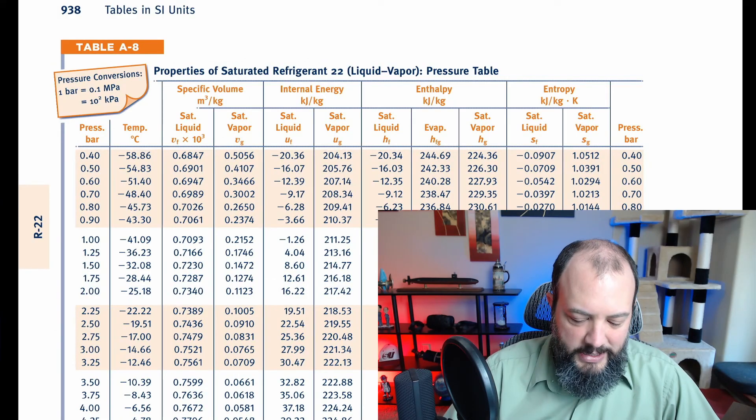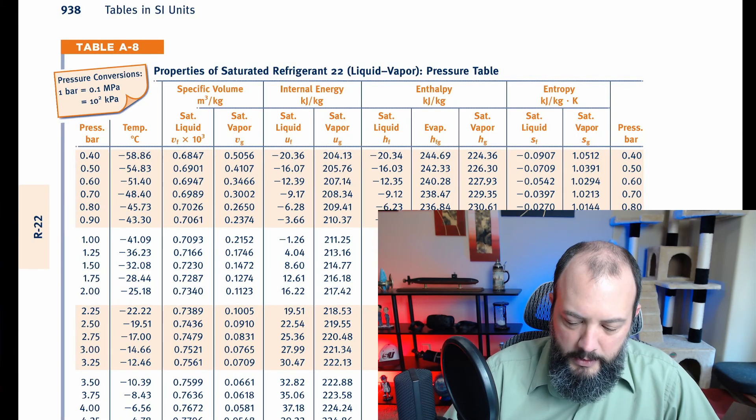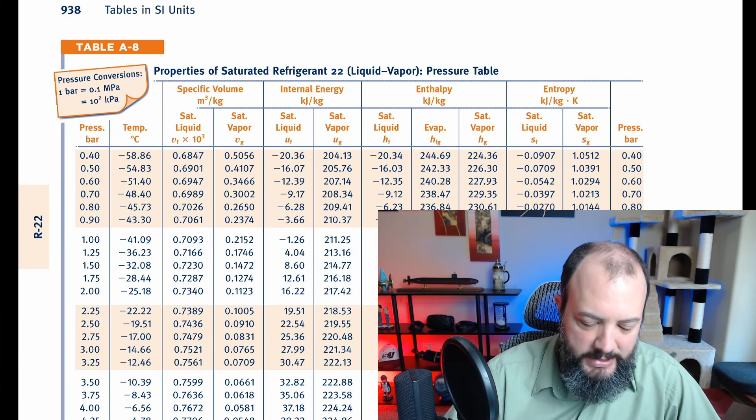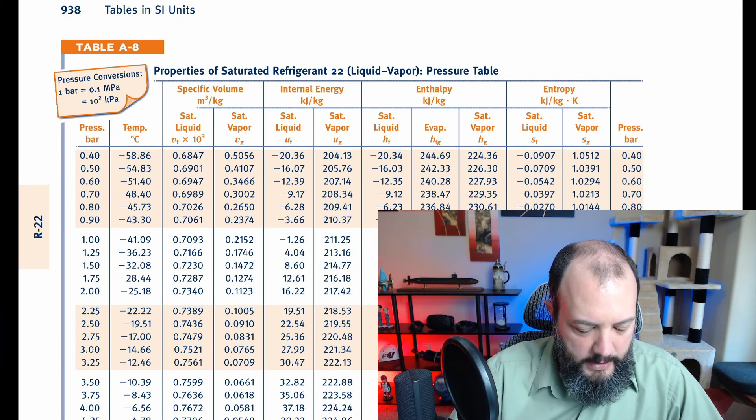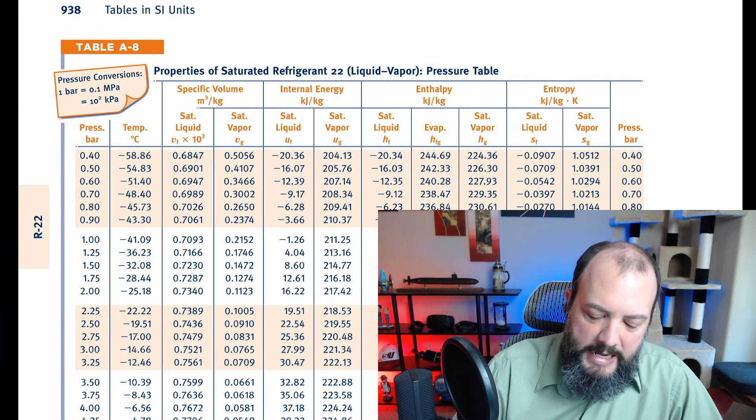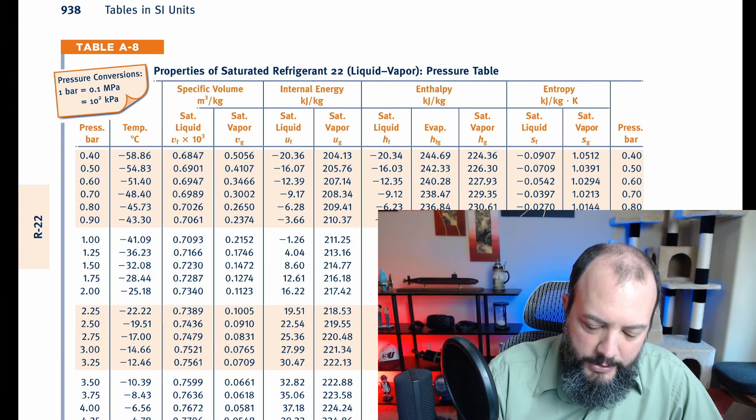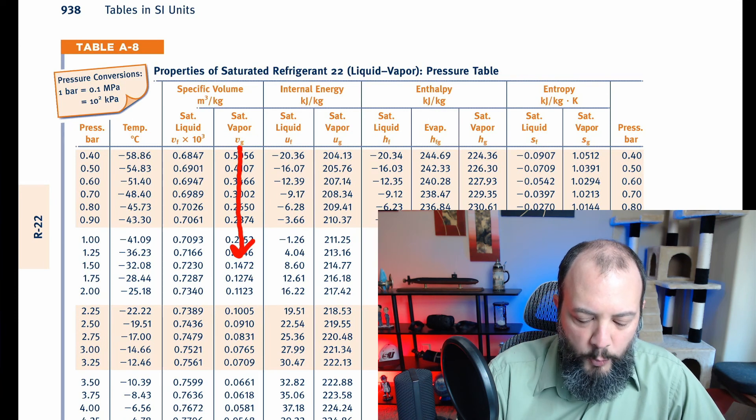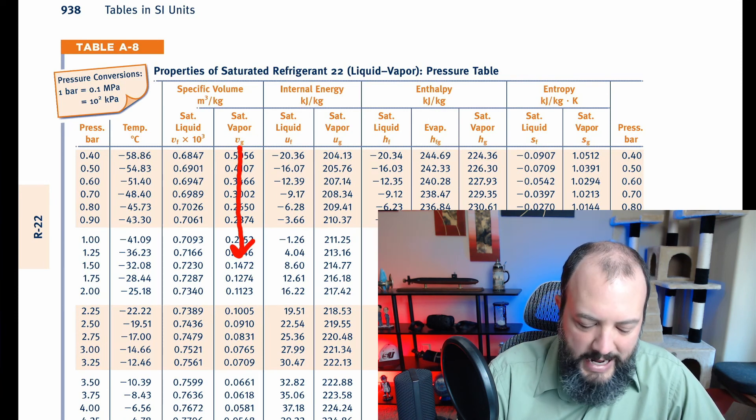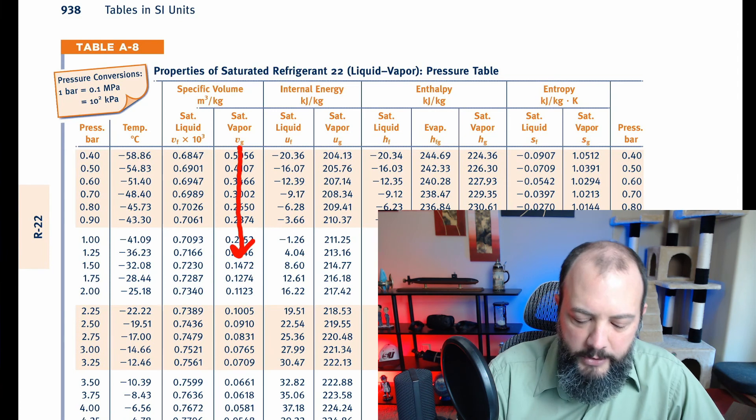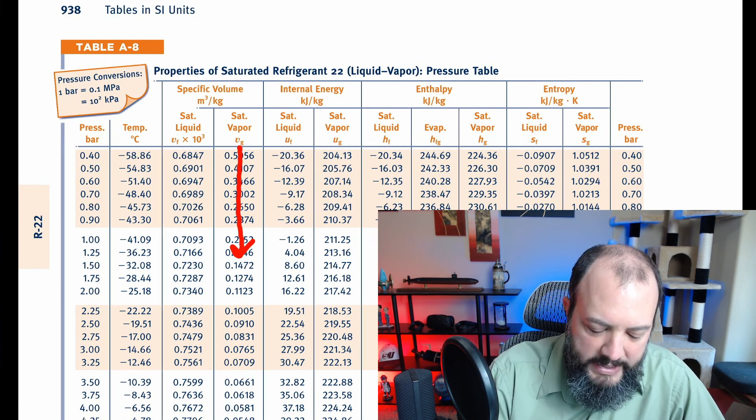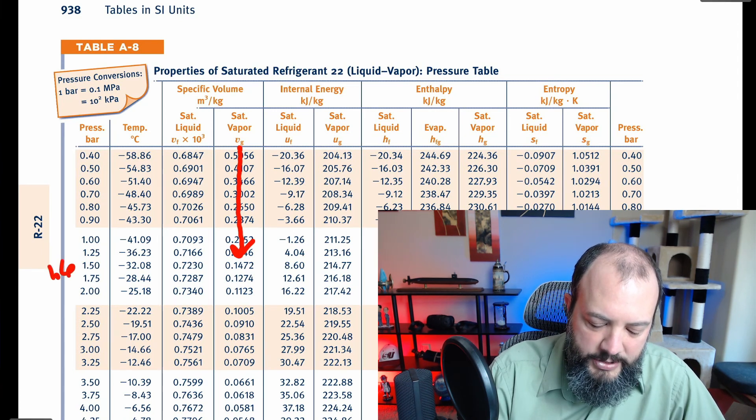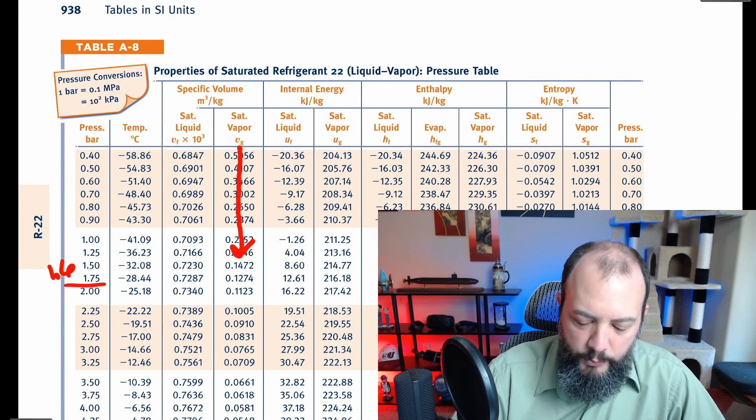So since I'm using the 8th edition of the Moran textbook Fundamentals of Thermodynamics this is going to be table A-8. And we'll see what's different about this problem than the last one is that we can use the saturated vapor column but unfortunately our 0.16 megapascals is not listed on this table. When we convert to bar we get a value of 1.6 bar but that actually falls between two different rows.